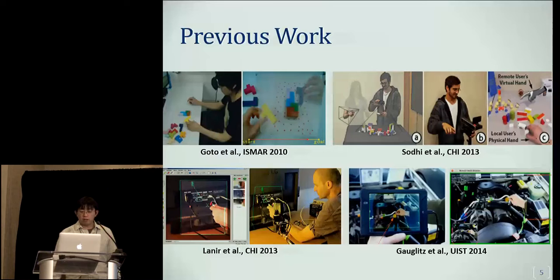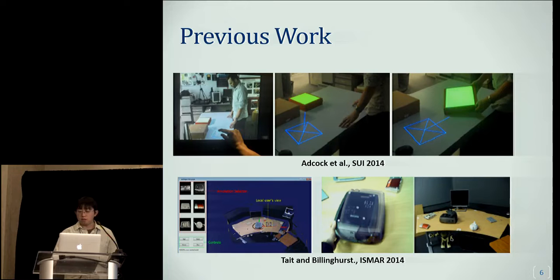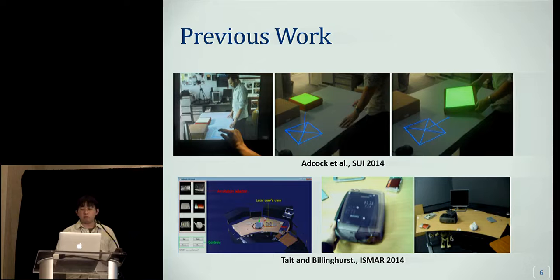Using AR for remote assistance has been quite popular, and many researchers have come up with interesting approaches, as you see here. However, most previous work allowed the remote SME to add supplemental information in the local user's environment, but cannot easily indicate how to precisely place a physical object relative to another in 3D. There are some existing systems, such as one by ADCOC, that allowed the SME to show how to place an object, but their approach is limited to a planar surface. The Tatum-Billinghart system works in 3D space, but the SME interacts with only keyboard and mouse on a monoscopic desktop display. In contrast, we allow the SME to show how to align a physical object relative to another directly in 3D on a stereoscopic head-worn display.